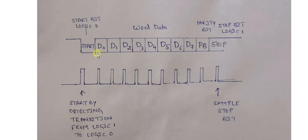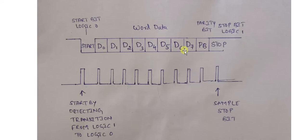After the start bit, data bits D0 to D7 follow. These are the actual data bits containing the information we want to send, in the form of logic zeros and ones. Each bit occupies a zero or one value based on whatever data we want to transmit.